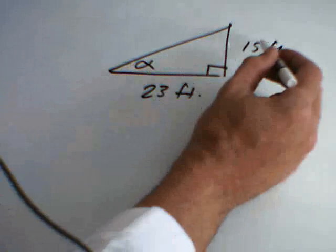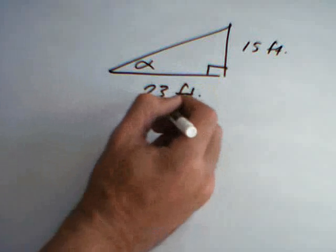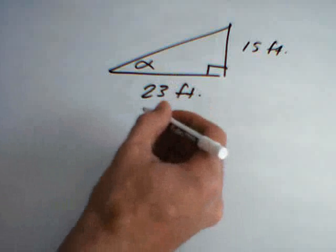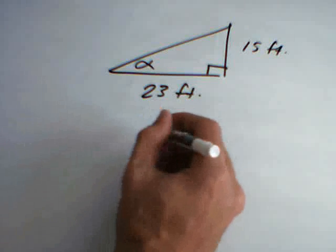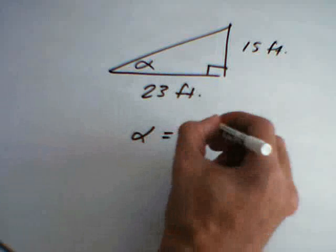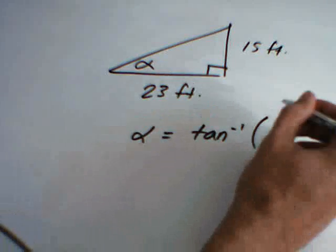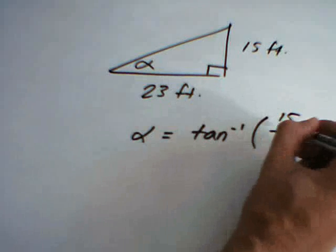Well, since 15 is opposite the alpha and 23 is adjacent to the alpha, we know that this is tangent. But since we're trying to find the missing angle, what we want to do is use the inverse tangent. Opposite over adjacent.